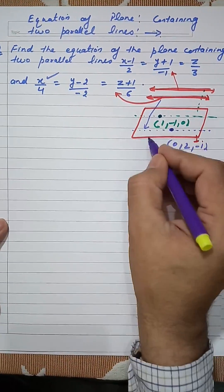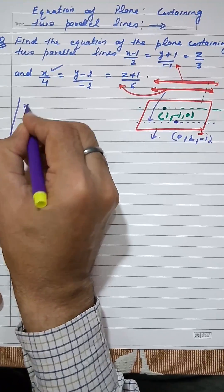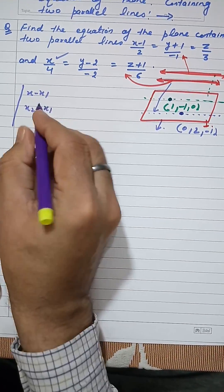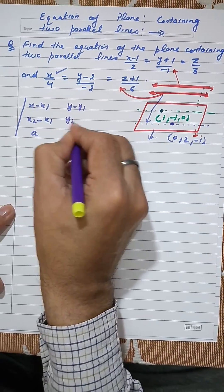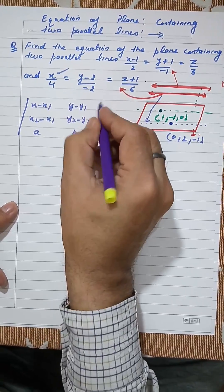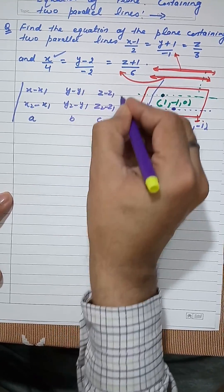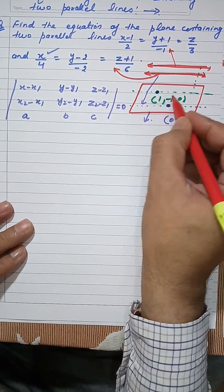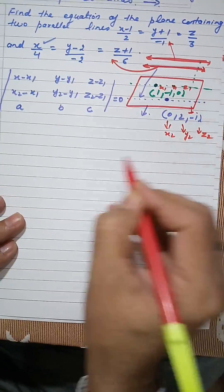Now let us find out the equation of the plane using one trick — the determinant method. The formula is: the determinant of x minus x1, x2 minus x1, a; y minus y1, y2 minus y1, b; z minus z1, z2 minus z1, c is equal to 0. Here (x1, y1, z1) and (x2, y2, z2) are the two points.